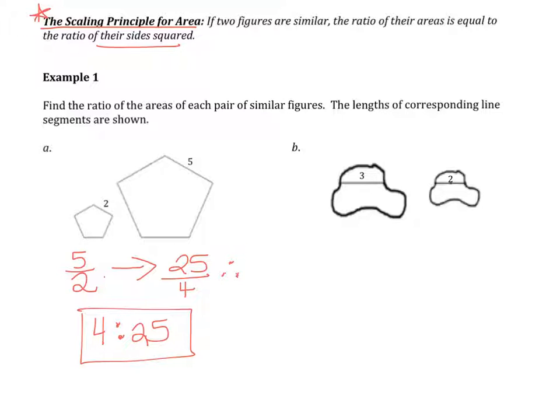The scale factor for the figures for B is 2 thirds, therefore the ratio of area is 4 ninths. And we write it as 9 to 4.